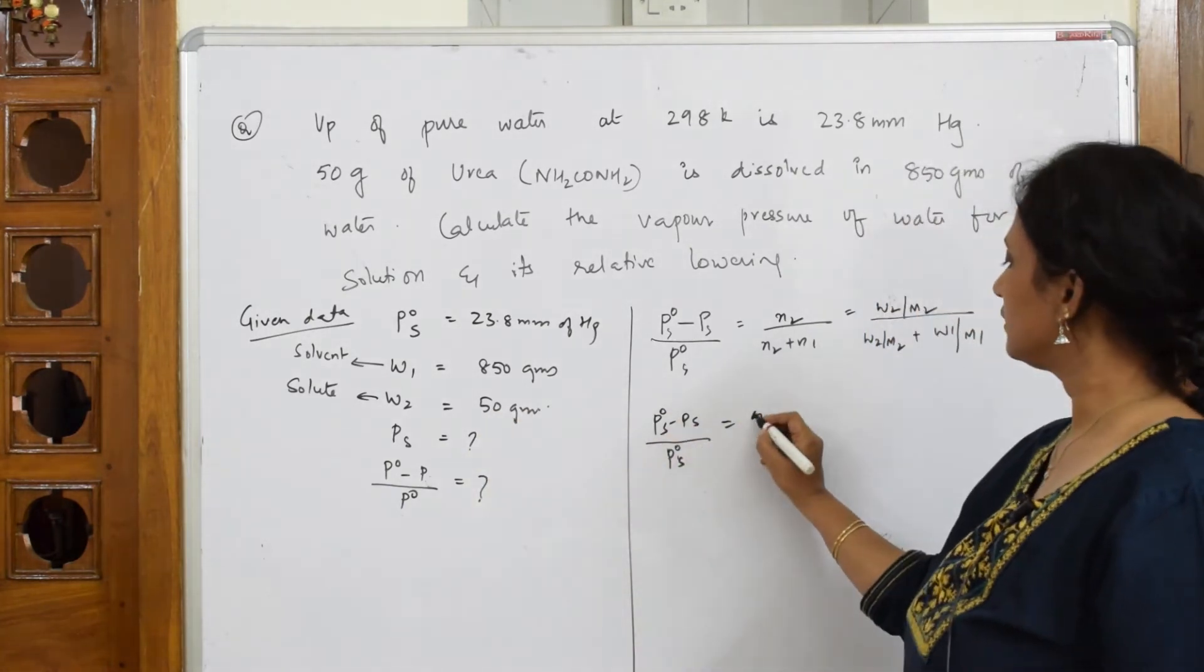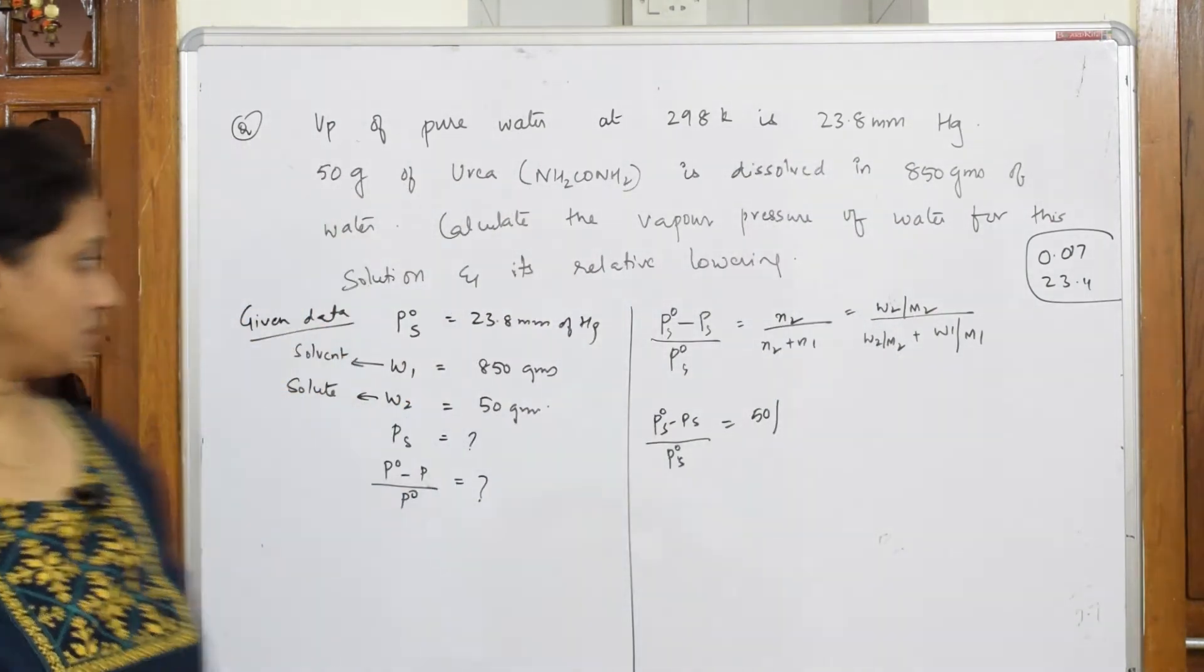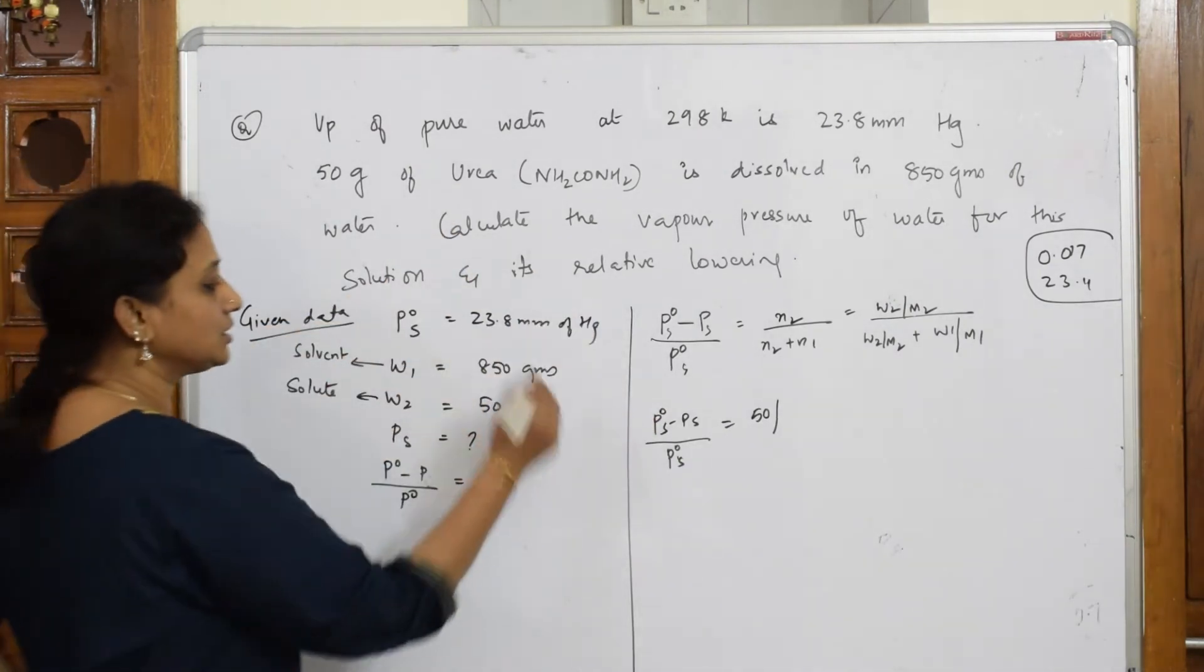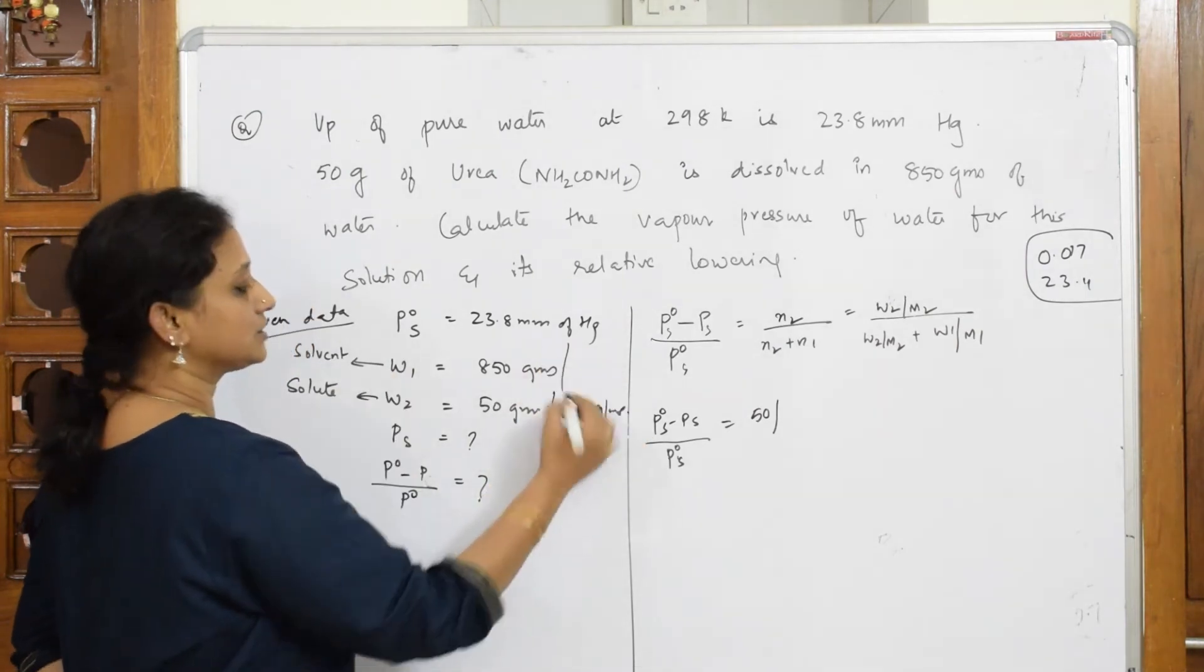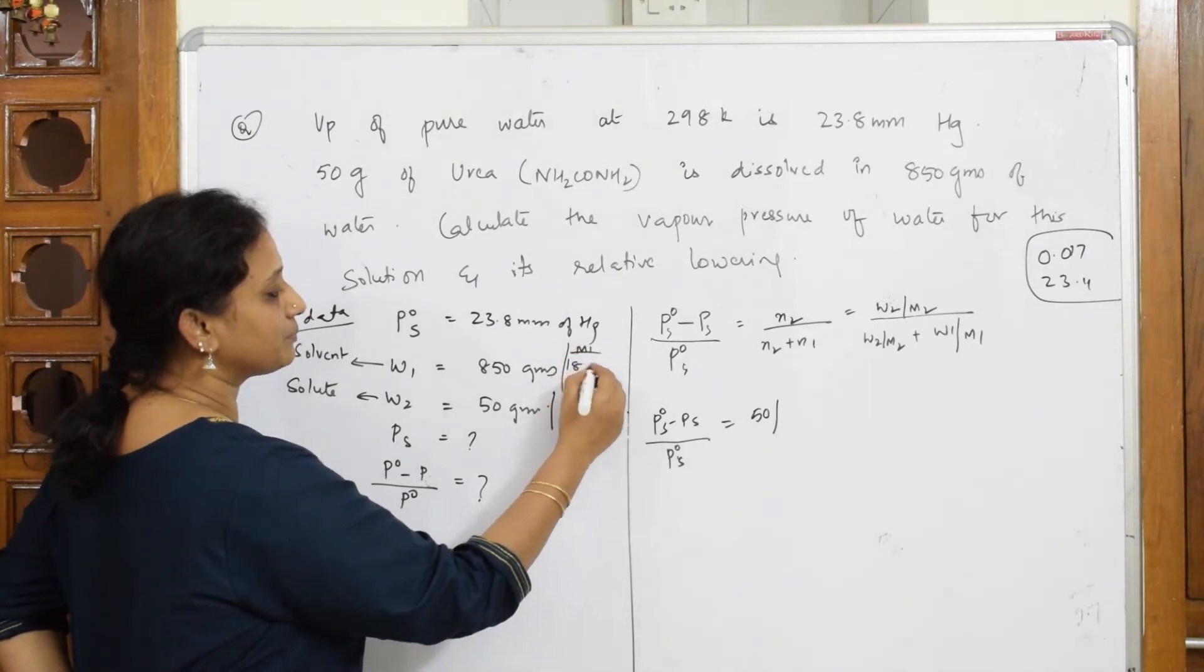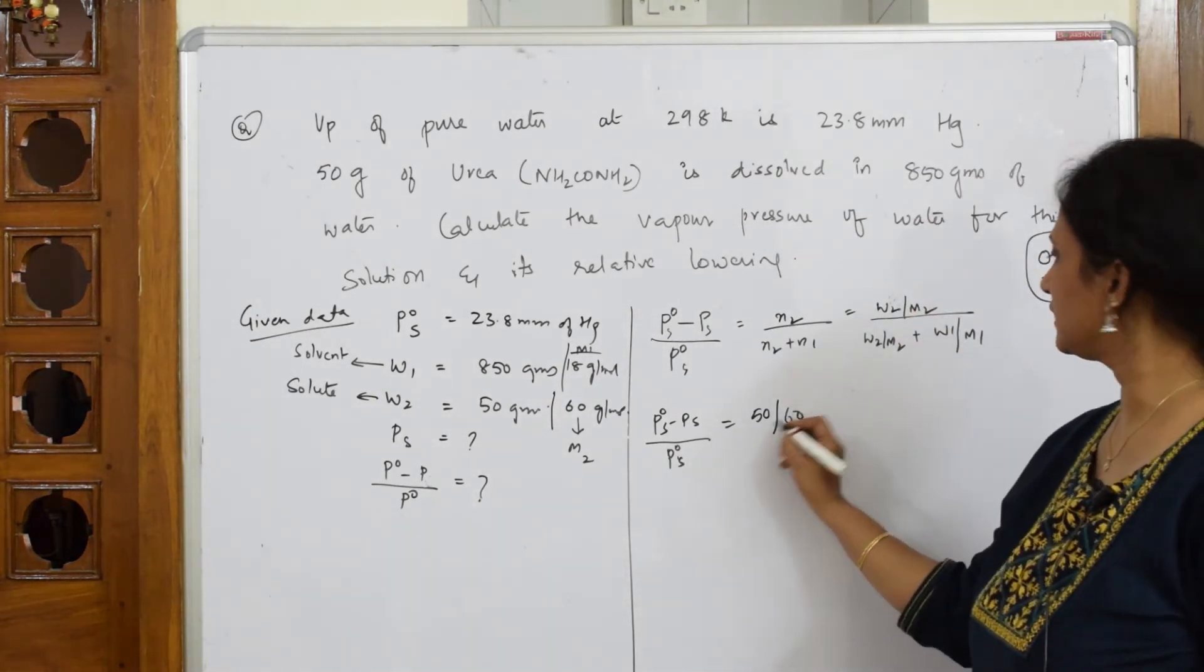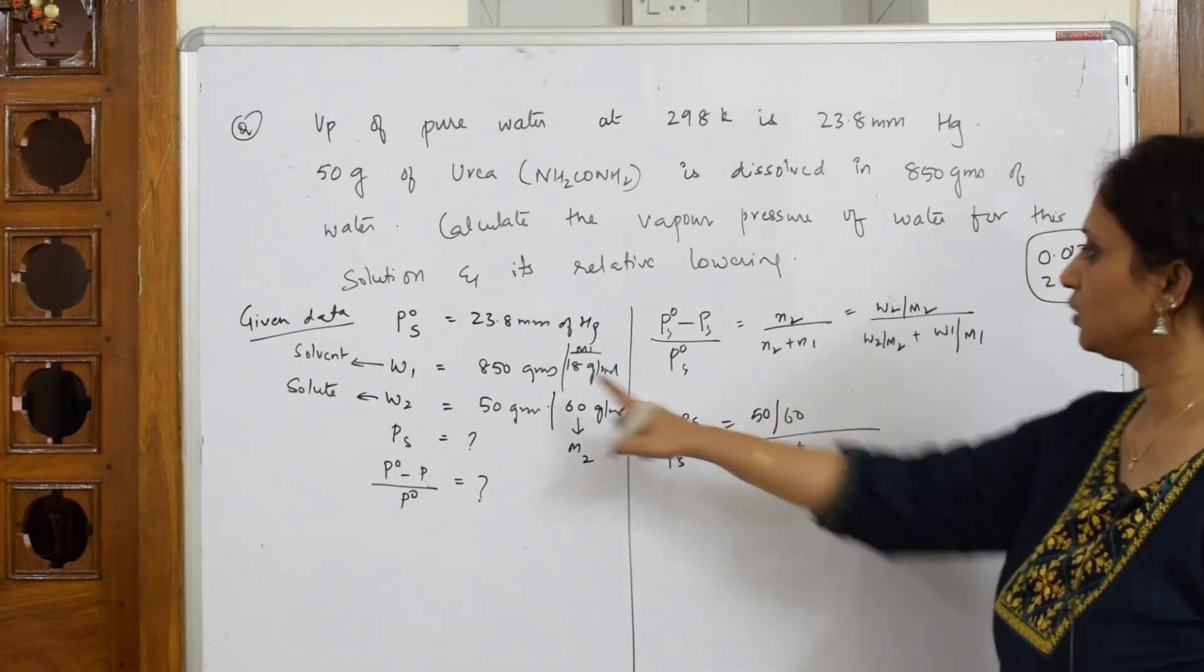Let's see: P naught s minus PS divided by P naught s is equal to what? w2, weight given to us is 50, divided by m2. m2 is nothing but your solute, isn't it? Now solute, what is the solute weight? That is urea, is 60 gram per mole. For water, this is your m1, 18 gram per mole water molecular weight.